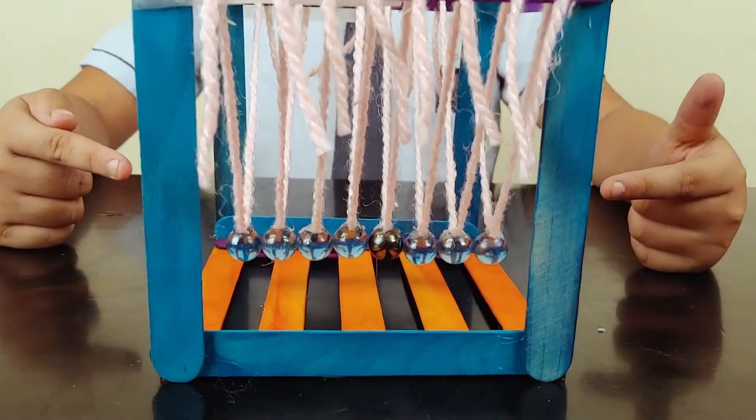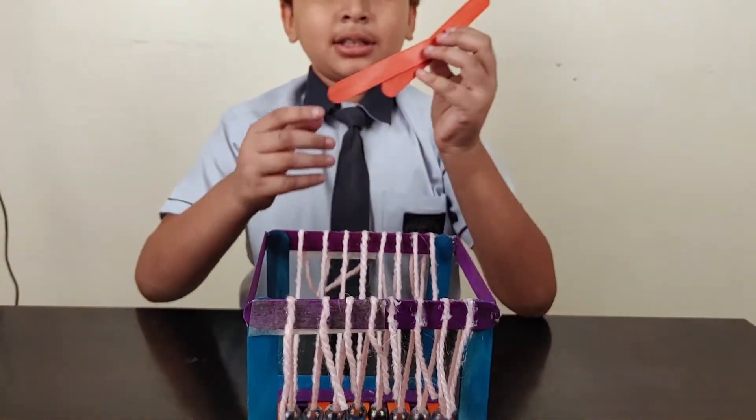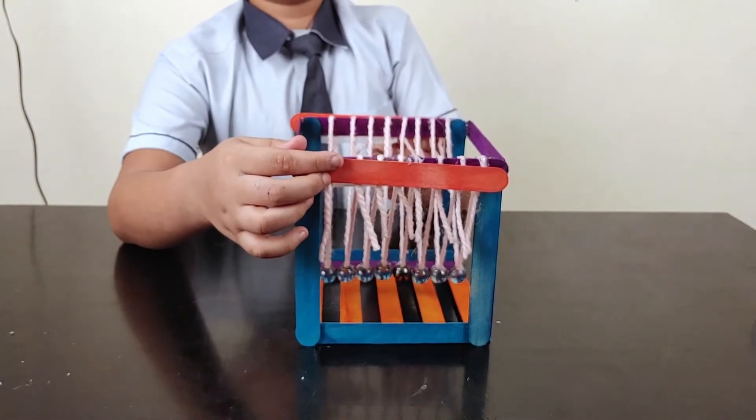See how I arranged it. Now the next step is take 2 more ice cream sticks, conceal those threads, and cut the remaining one.